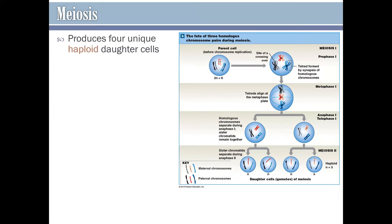Meiosis only occurs in our sex cells. With meiosis, we start off with one normal diploid parent cell, but in the end we have four unique haploid daughter cells. Haploid means they have only one of each chromosome — in humans, our haploid gametes will only have 23 chromosomes. So if we start with six chromosomes, two of each type, we end up with three chromosomes and only one of each type. Because genetic material can be swapped between the two types of chromosomes, each gamete has the potential to be completely unique — they are not genetically identical.